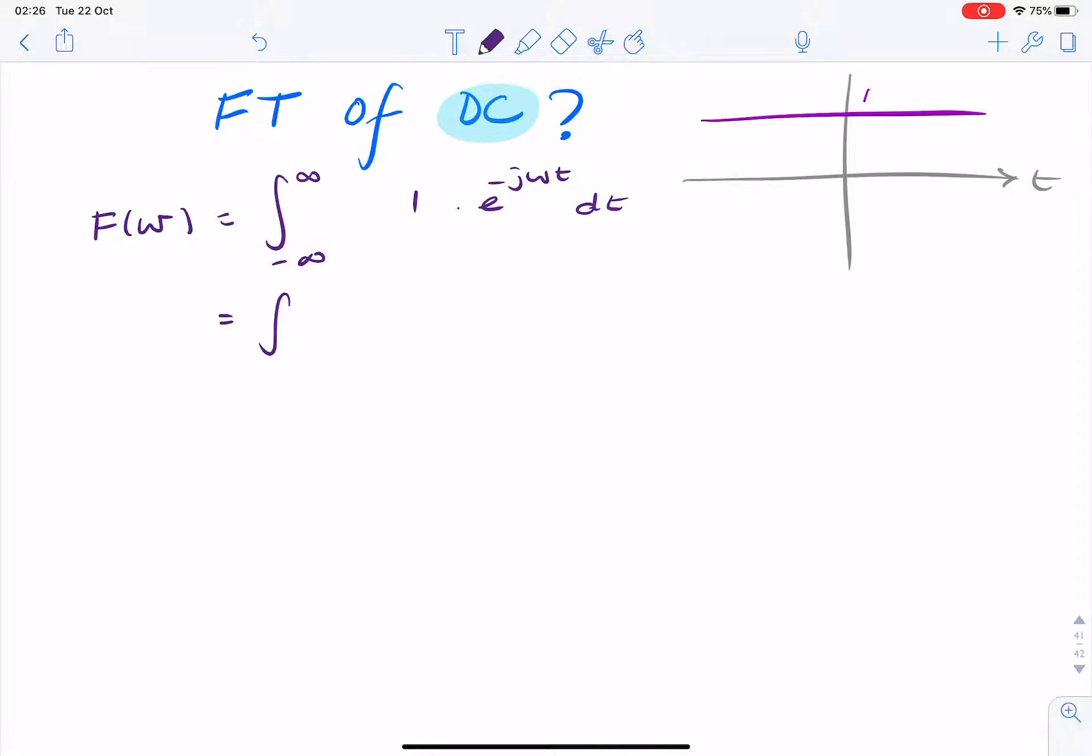Let me show you. The integral, we can integrate straight away because it's really easy. It's just minus one over j omega times e to the minus j omega t, minus infinity to infinity.